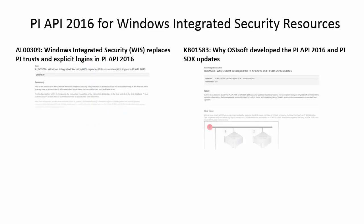With the release of PI API 2016 for Windows Integrated Security, it is now possible to authenticate PI API connections using PI mappings with Windows Integrated Security, instead of less secure PI trusts. To demonstrate how to implement PI API for Windows Integrated Security in a simple environment, let's upgrade an existing interface node to use the PI API for Windows Integrated Security.